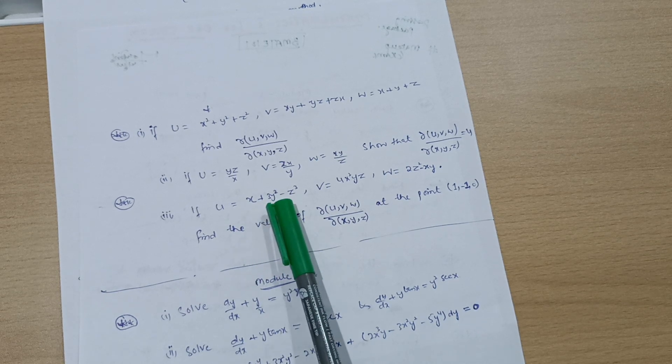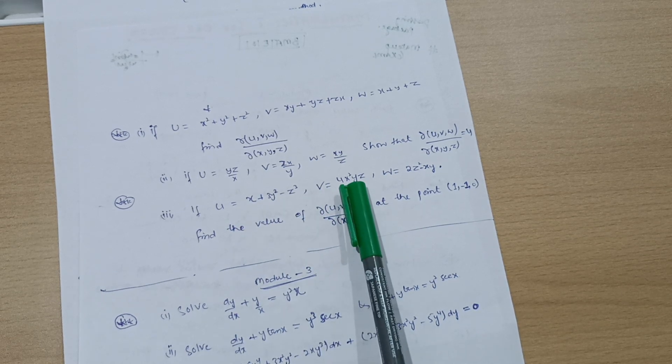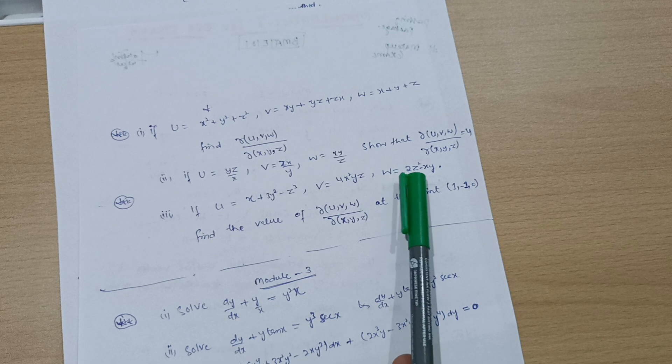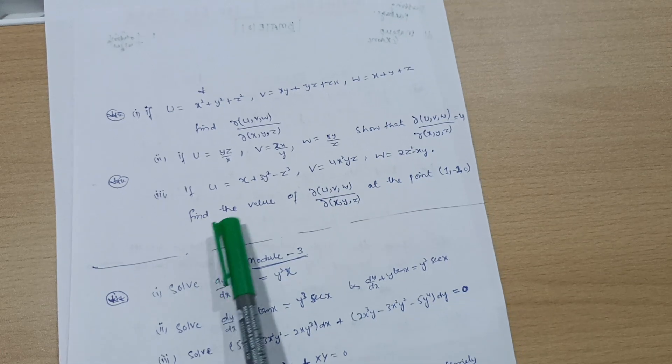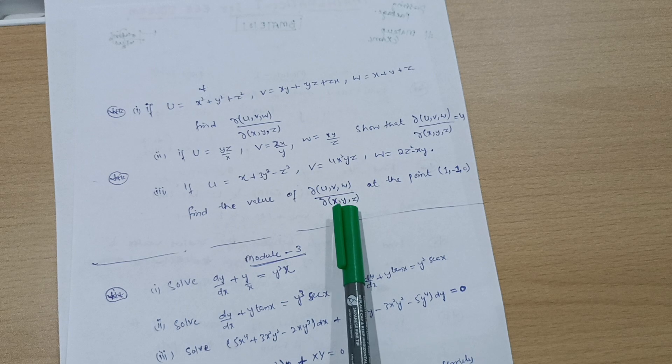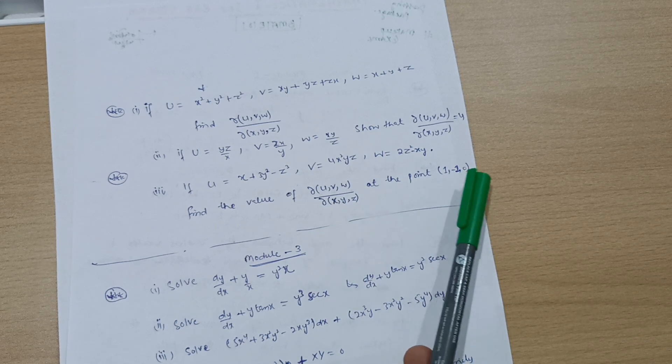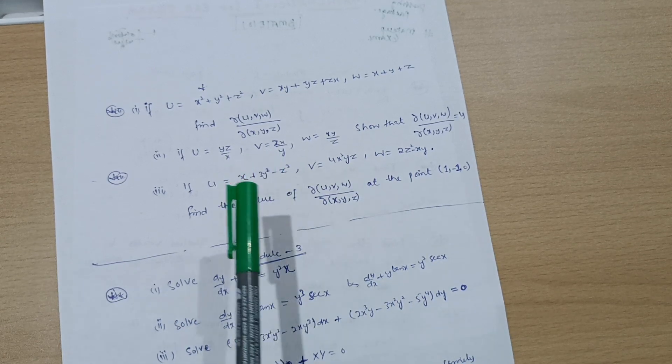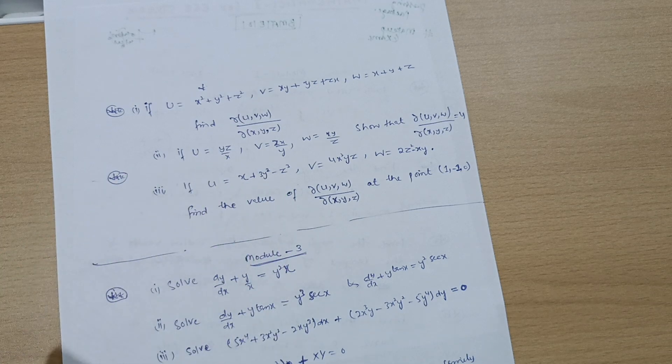If u equals x plus 3y squared minus z cubed, v equals 4x squared yz, w equals z squared minus xy, find the value of dow of uvw divided by dow of xyz at point (1, -1, 0). Practice these questions from Module 2 so you will feel some comfortness.